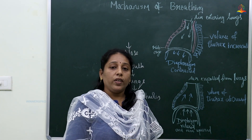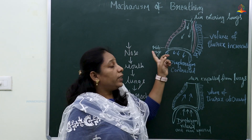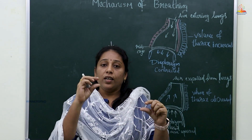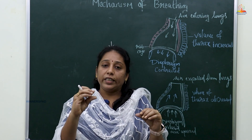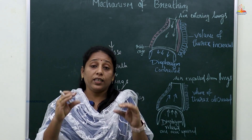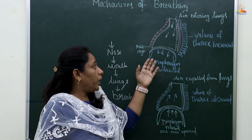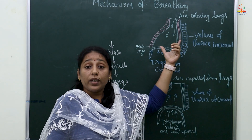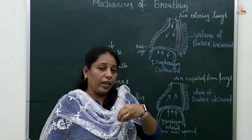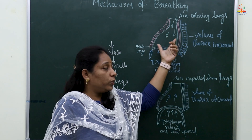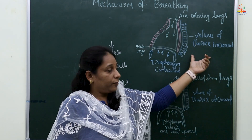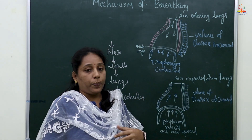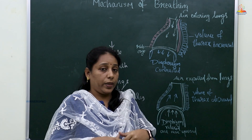There are intercostal muscles — muscles present between the ribs. When inhaling, the pressure inside the lungs is negative compared to atmospheric pressure. This process is called inspiration. During expiration, you expel air — intake of oxygen and expel of carbon dioxide.